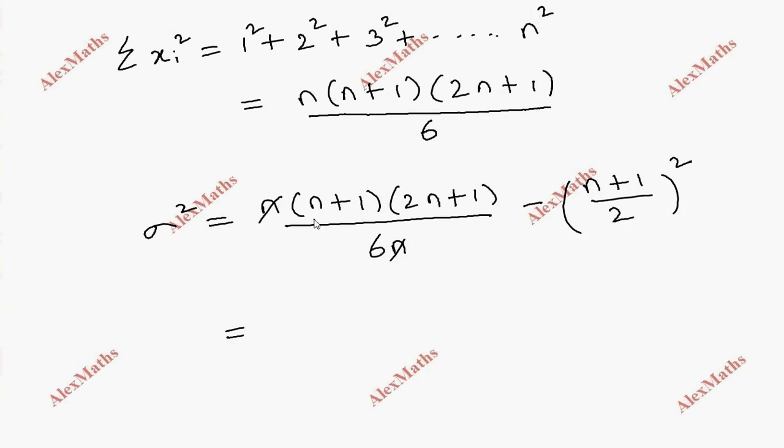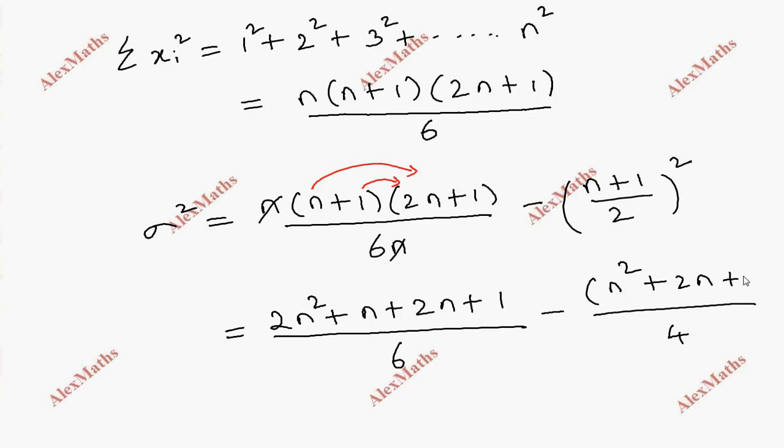If we expand the numerator, this will be 4, so this will be 2n square plus 2n plus 1 whole divided by 6.